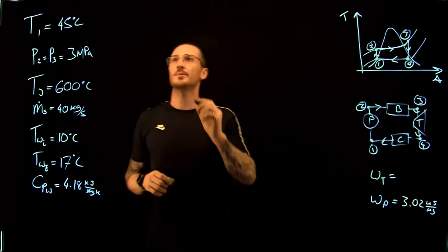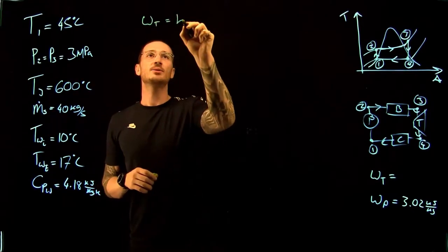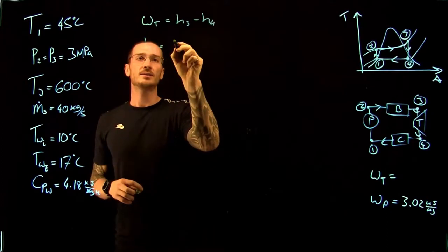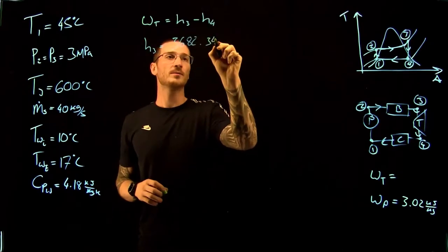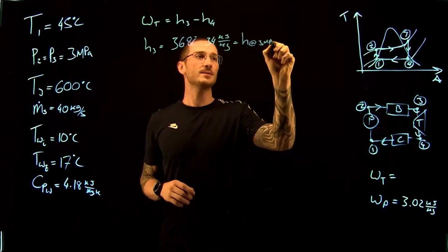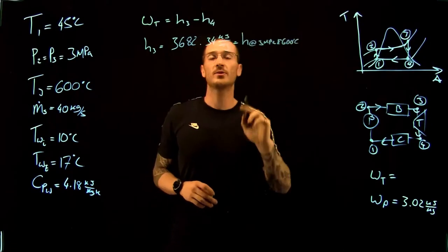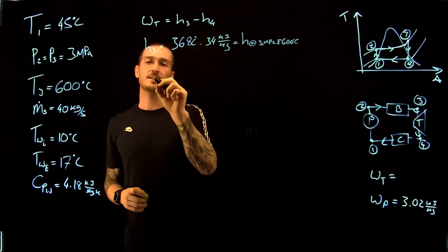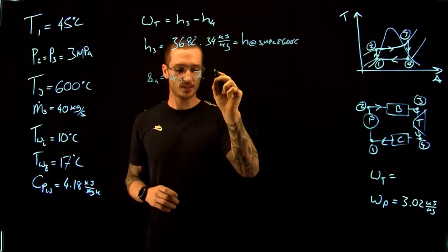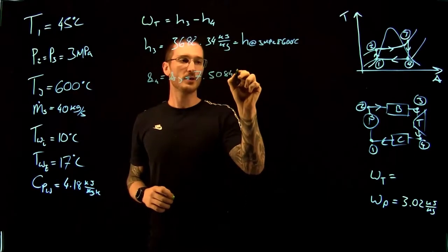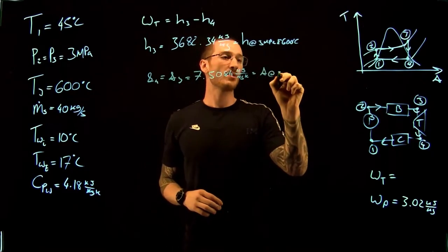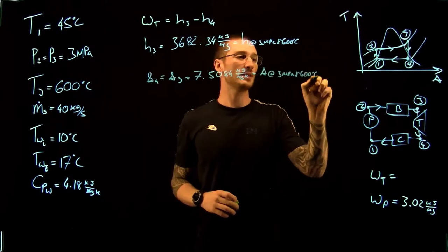Now let's solve for the specific work of the turbine. The specific work of the turbine equals the enthalpy at state 3 minus the enthalpy at state 4. The enthalpy at state 3 is 3682.34 kJ per kilogram, from the superheated vapor tables at 3 MPa and 600 degrees C. We also assume isentropic expansion, so the entropy at state 4 equals the entropy at state 3, which is 7.5084 kJ per kilogram Kelvin, also at 3 MPa and 600 degrees C.